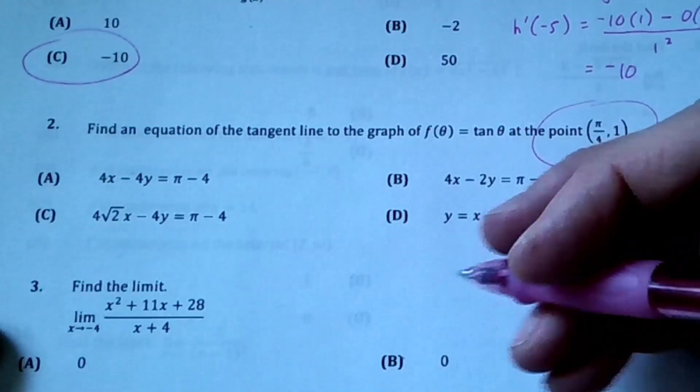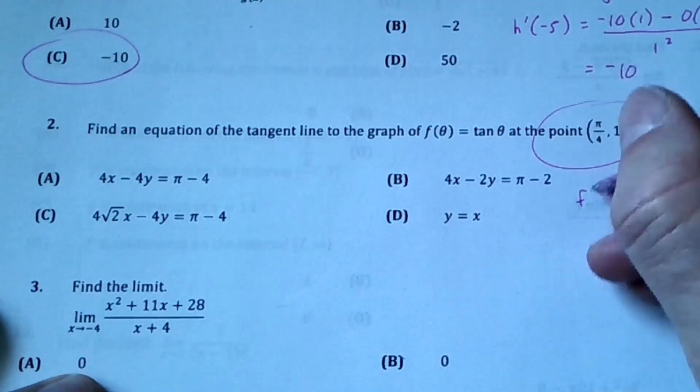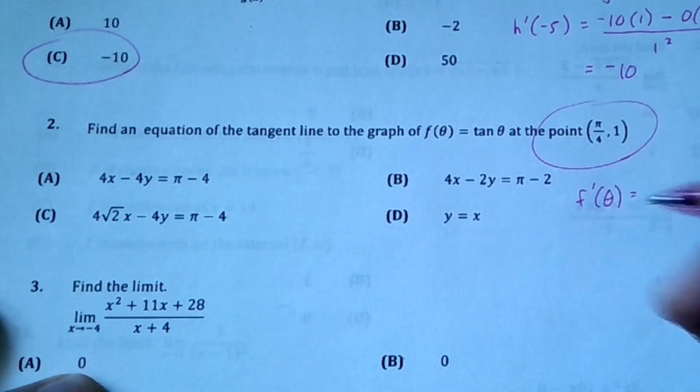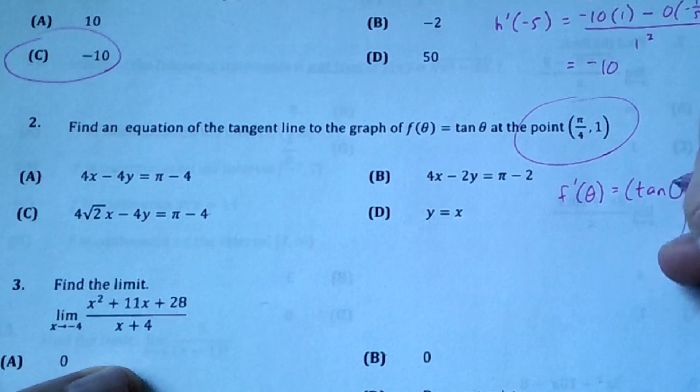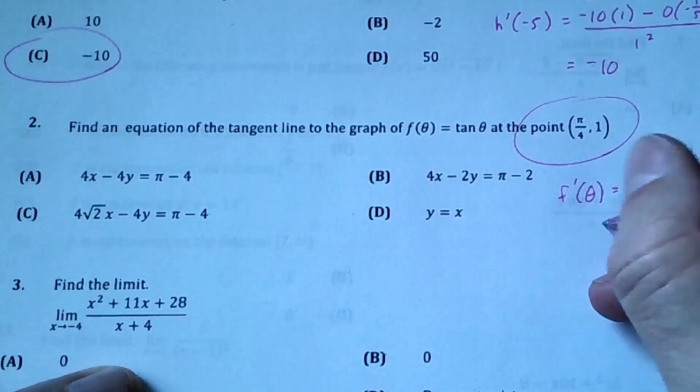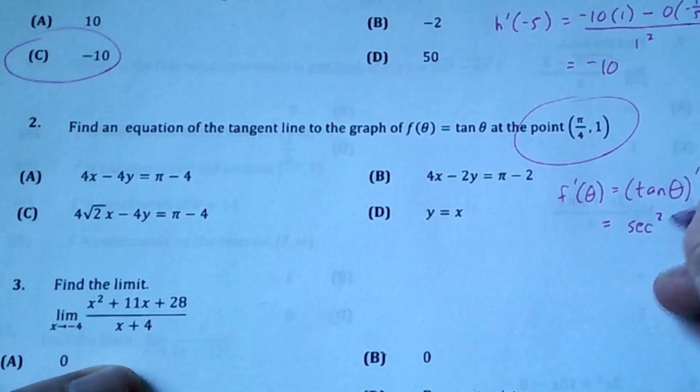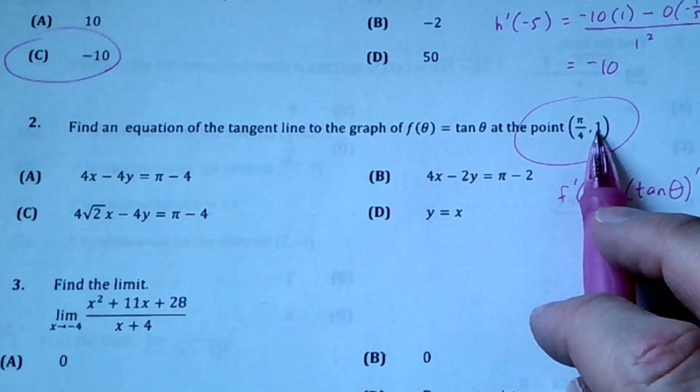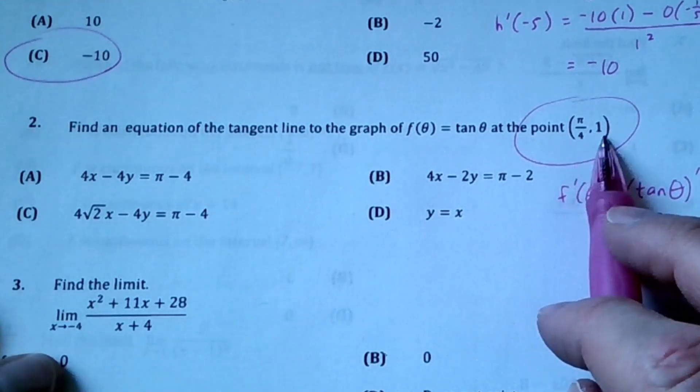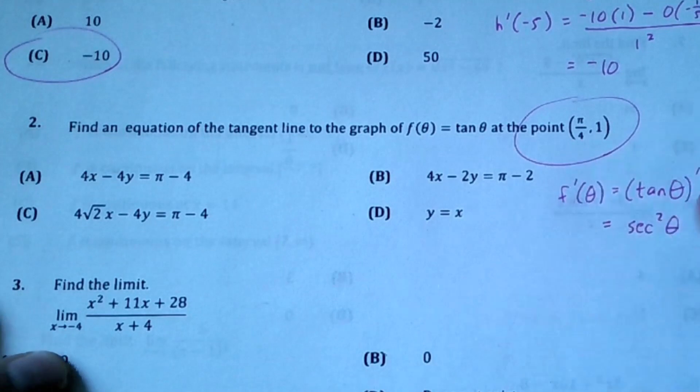We find the slope by taking the derivative. The derivative of tangent is secant squared. I want it at this point - the 1 is the output of the original function, but I have to plug in π/4 for the derivative.